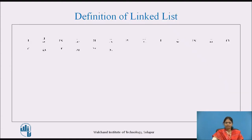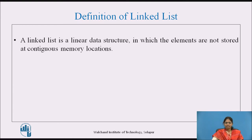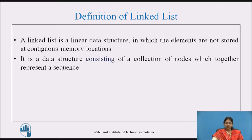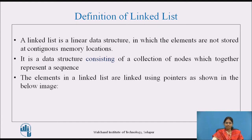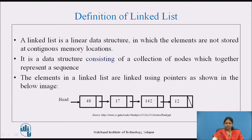Definition of Linked List: A linked list is a linear data structure in which the elements are not stored at contiguous memory locations. It is a data structure consisting of a collection of nodes which together represents the sequence. The elements in a linked list are linked using pointers, as shown in the image. This figure represents a linked list, which is nothing but the collection of nodes. The first node is pointed to by the pointer head and the last node is terminated by a null.